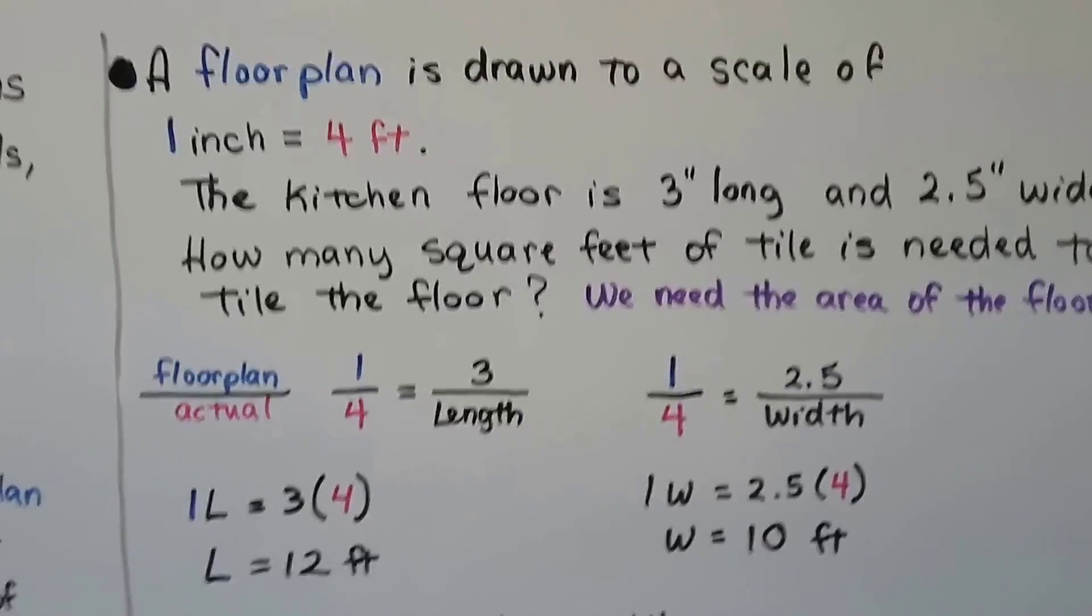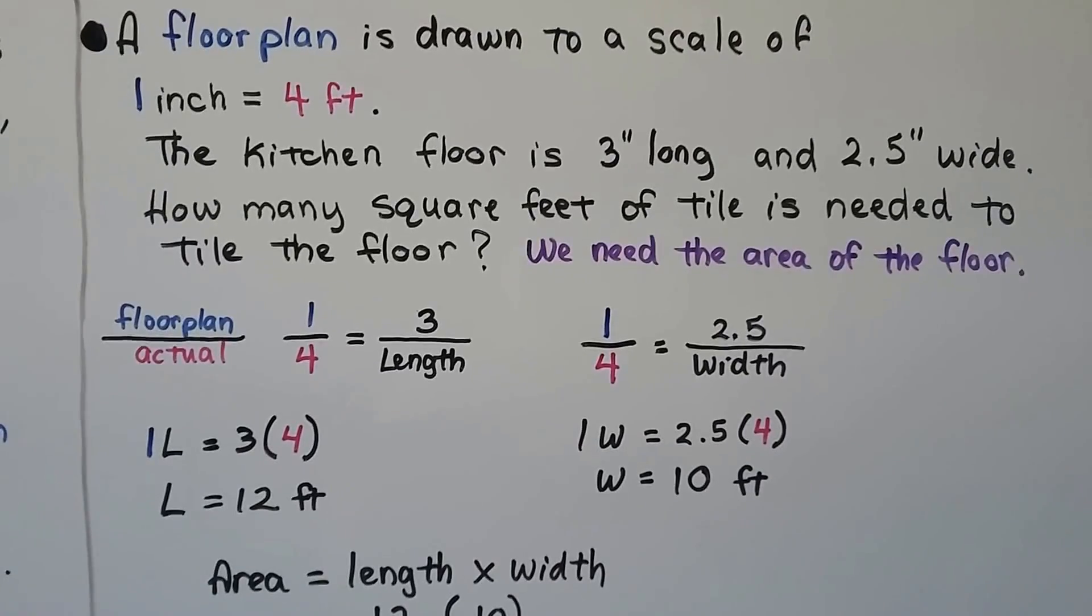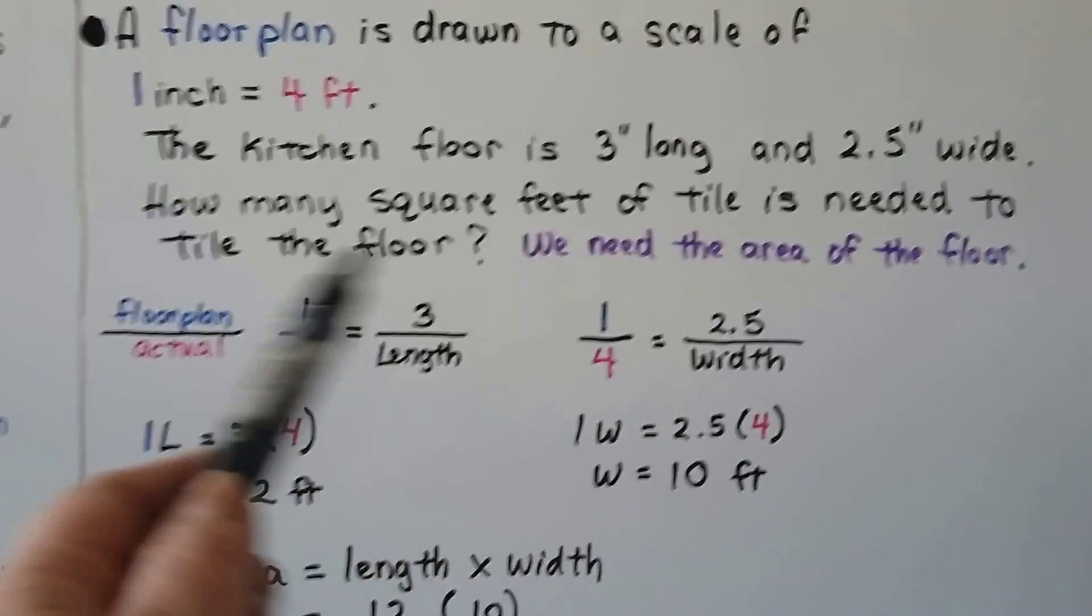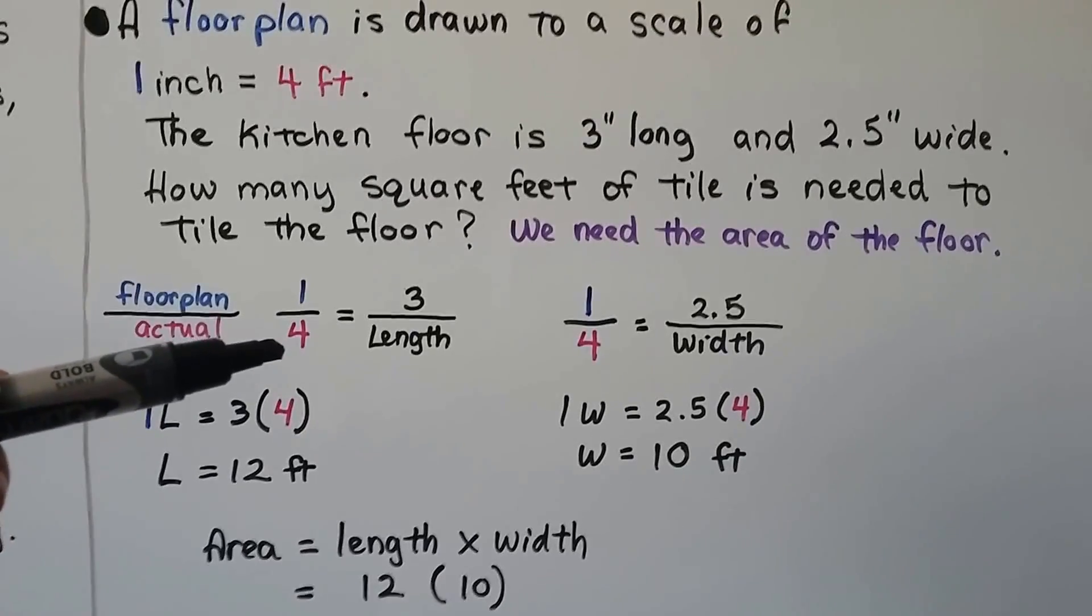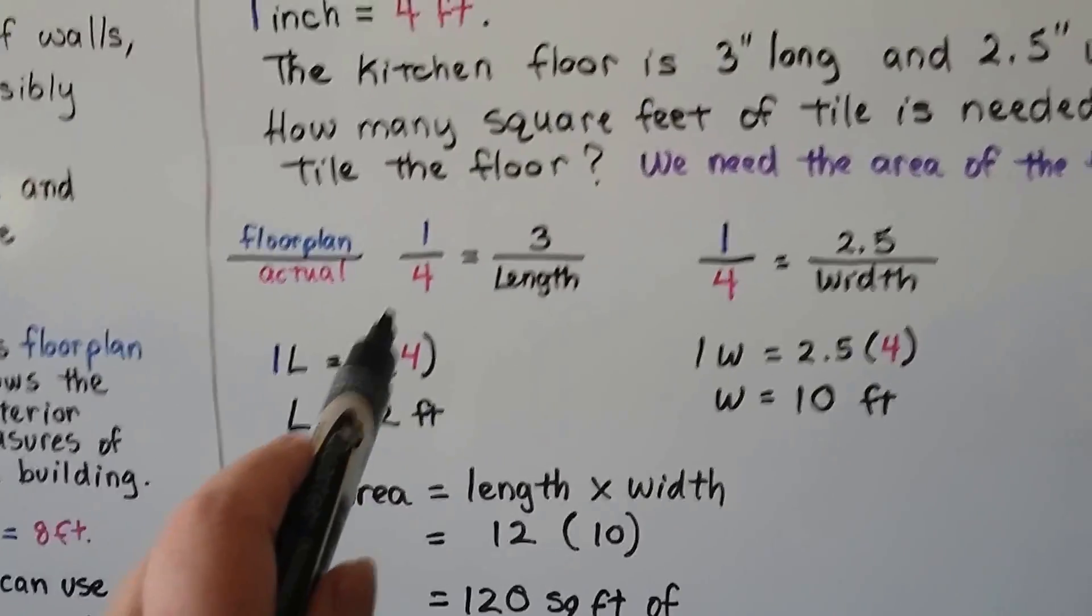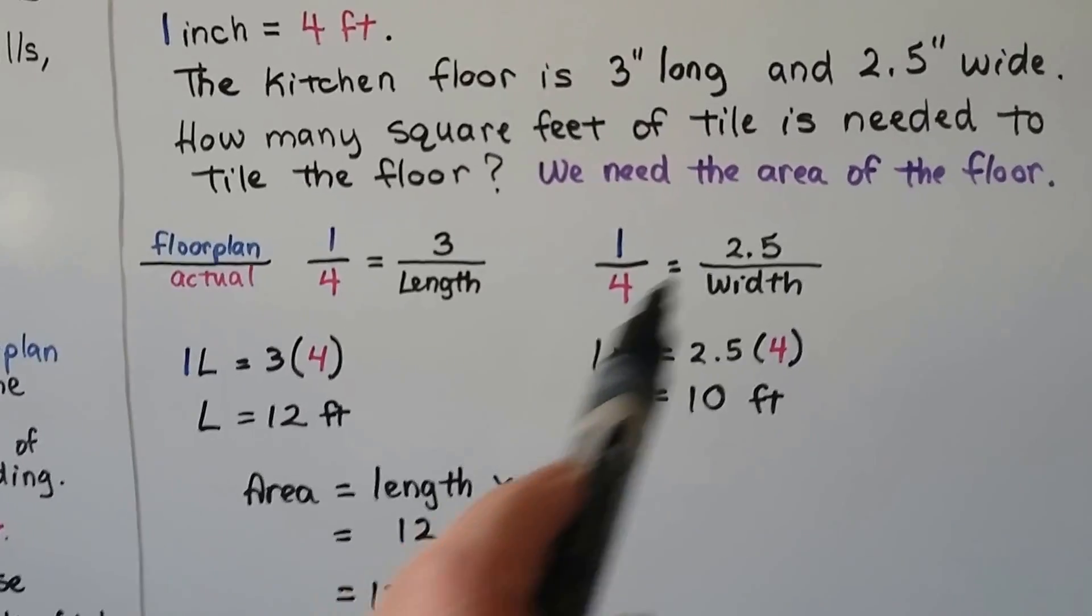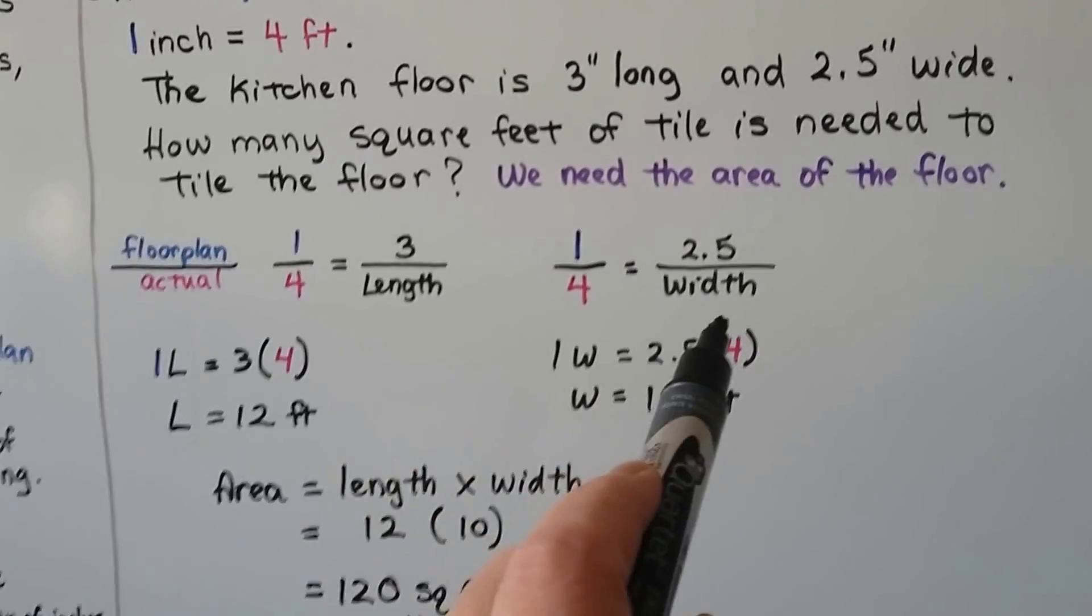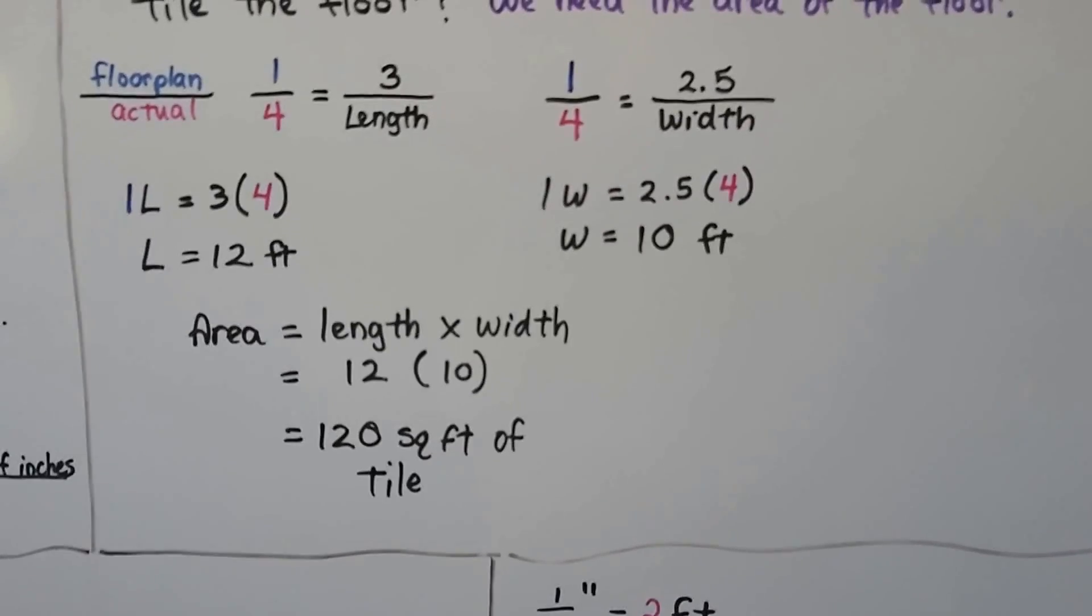A floor plan is drawn to a scale of one inch equals four feet. Here's our fraction, one-fourth. The kitchen floor is three inches long and 2.5 inches wide. How many square feet of tile is needed to tile the floor? Well, to find the floor tile, we need the area of the floor, don't we? So, we're going to have our floor plan one inch is the actual four feet. We have our one-fourth here. We do our length and our width just like we did for this one because we need to find the area. So, we've got three inches long. That's the length. We cross multiply and get one L equals three times four. So, we know the length is twelve feet. The width is two point five. So, now we've got the one-fourth equals the two point five over width for W. We're going to have one W equals two point five times four or ten feet. Now, we do the length times the width and twelve times ten is 120 square feet of tile.